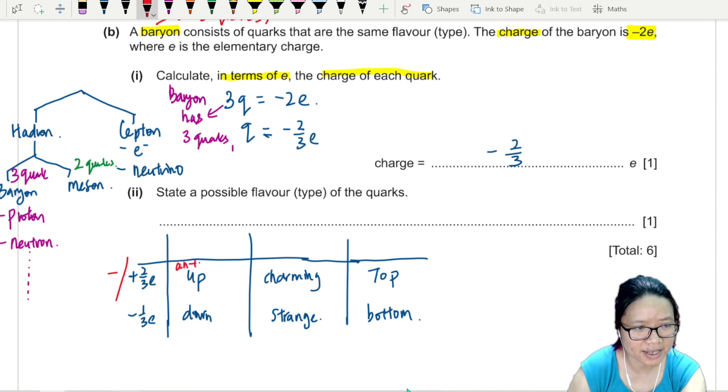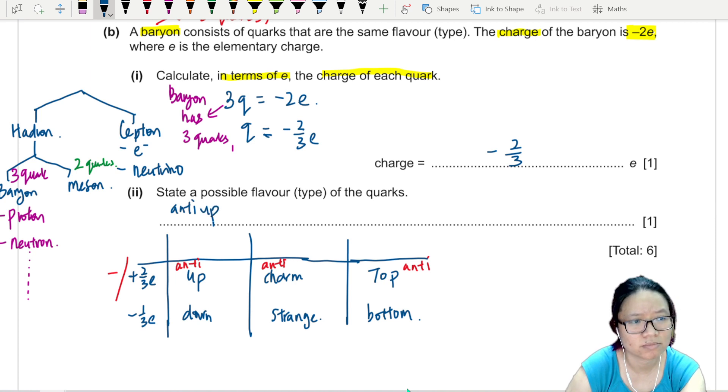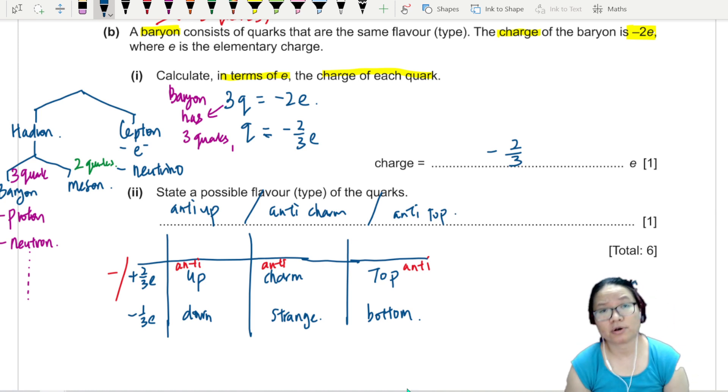So it will be anti-up, anti-charm or anti-top. Did you want to write which one? Anything? Anti-up, or anti-charm, or anti-top. All of them will have a charge of negative 2/3. Anti-up is more stable, so it's supposed to be the right one. But you write any of these three is fine.